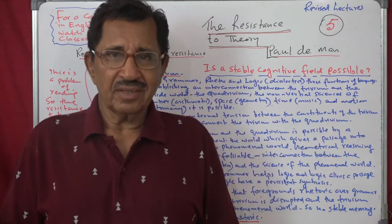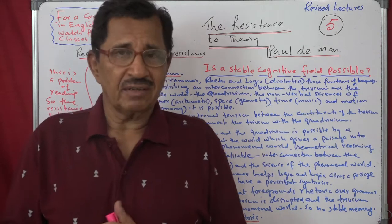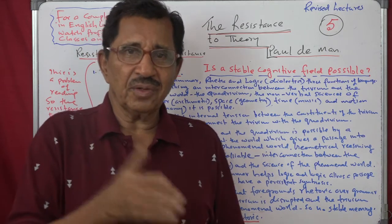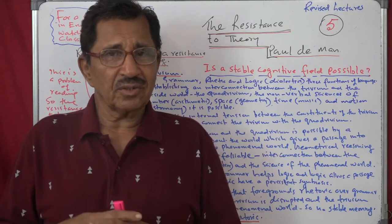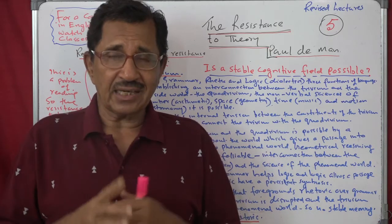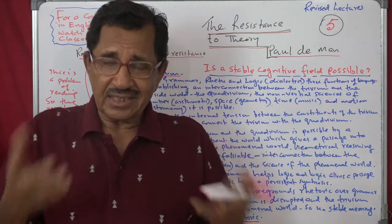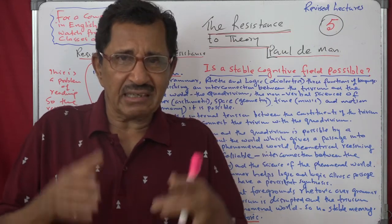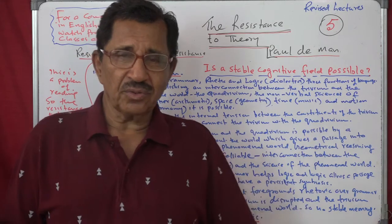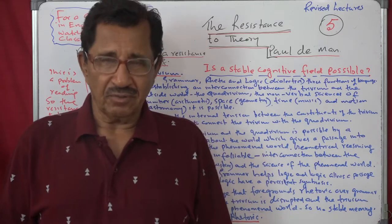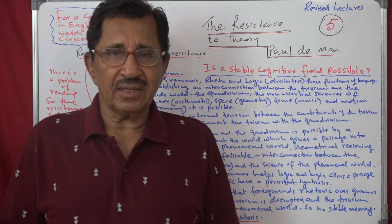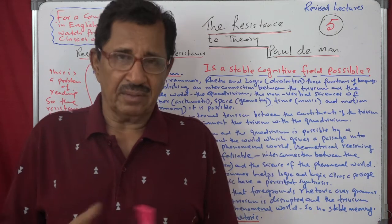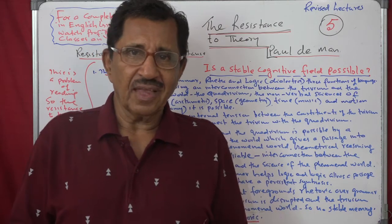When grammar and logic take precedence over rhetoric, you can enter through mathematical discourse into the mathematical discourse of the world — which is perfect reasoning. Geometrical reasoning leaves nothing out; there is no room for imagination. It is solid, rigorous reasoning. Through mathematical discourse you go to logic, and from logic to the world outside. But when literariness comes in, the Trivium becomes sick and unable to connect to the world outside.